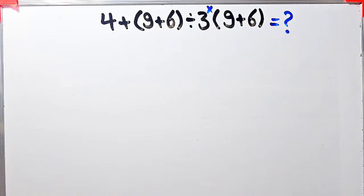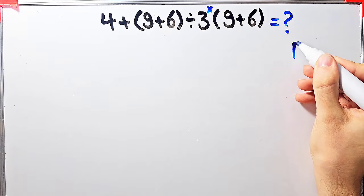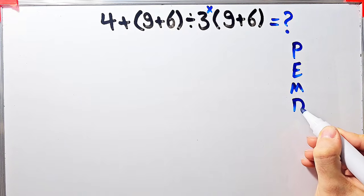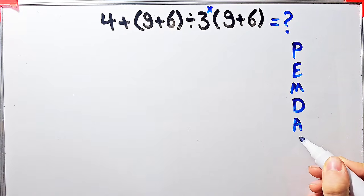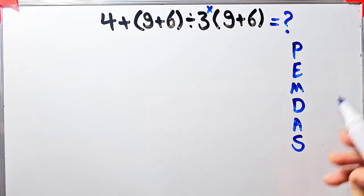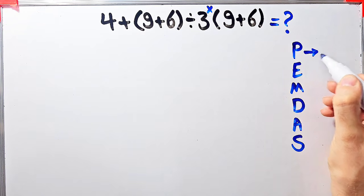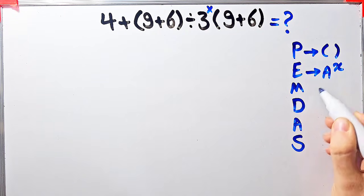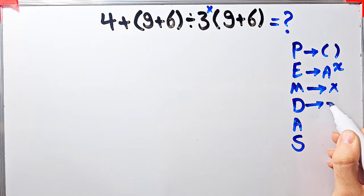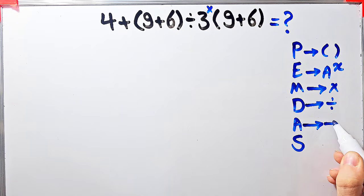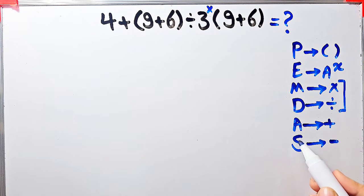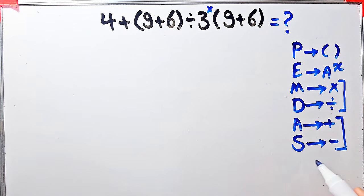To solve this question we need to follow the PEMDAS rule. PEMDAS shows the priority of the mathematical operations, and if you don't pay attention to this rule you get the wrong answer. P stands for parentheses, E for exponent, M for multiplication, D for division, A for addition, and S for subtraction. Multiplication and division have the same level of priority; addition and subtraction also have the same level of priority. When we have both, we start from the left.